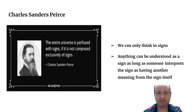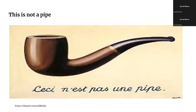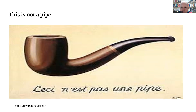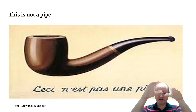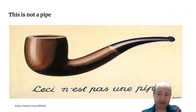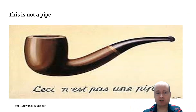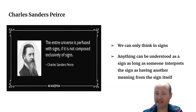This is illustrated by the famous painting by French artist René Magritte, which reads 'This is not a pipe' — because it is an image of a pipe, not the pipe itself. Similarly, a map and the territory it represents are two different things. A sign has a meaning that someone understands which is not the sign itself.